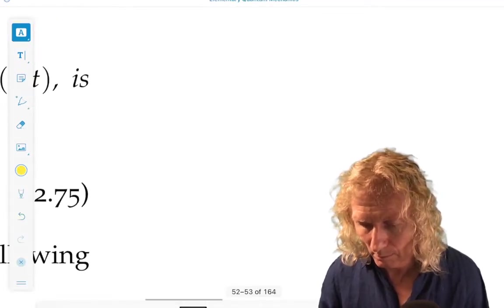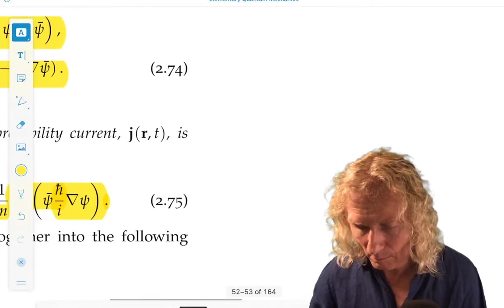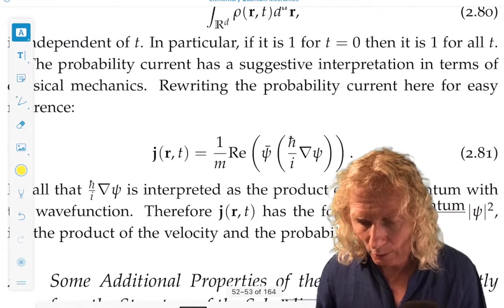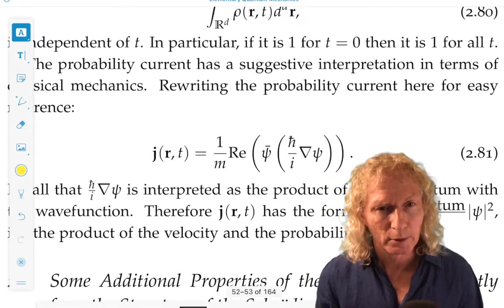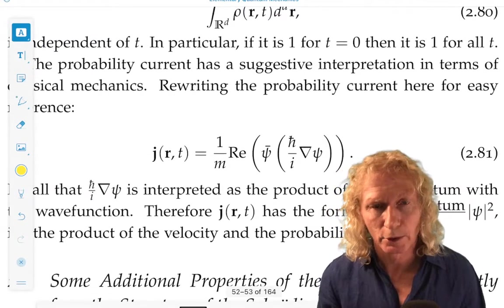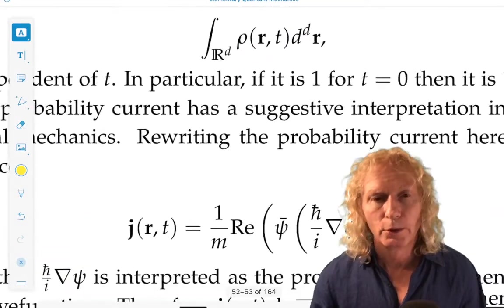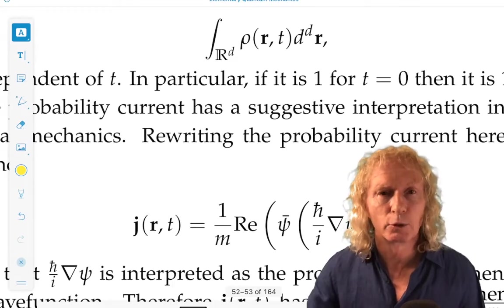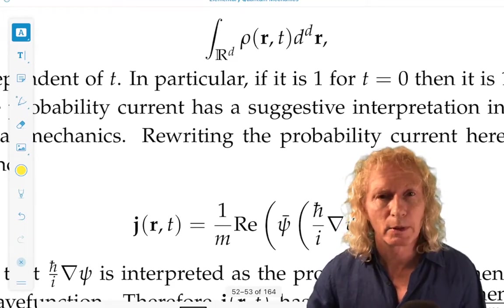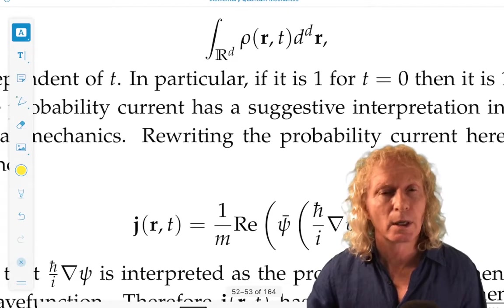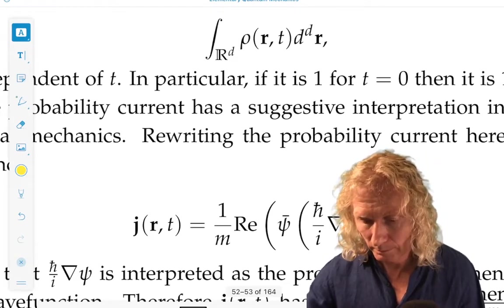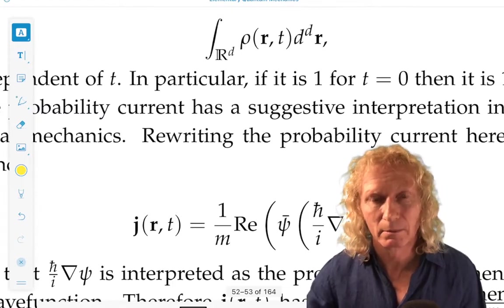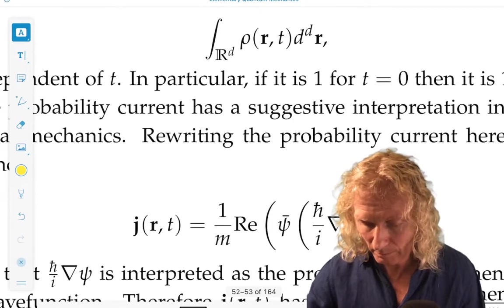So, with the, from that equation, that continuity-like equation, you can conclude, with some manipulations, by integrating it over a control volume, essentially, that probability is constant in time. Which is interesting, because probability density need not be.